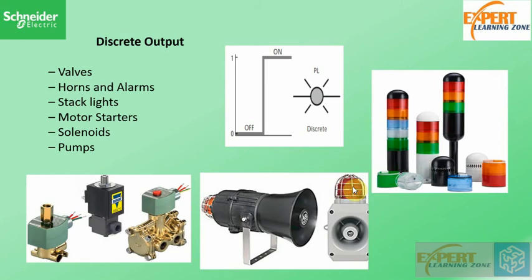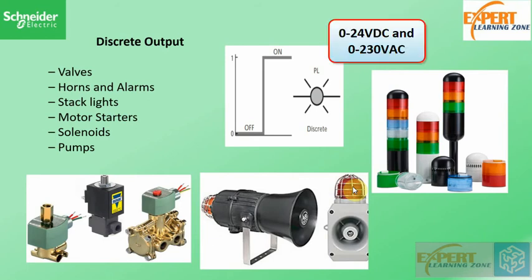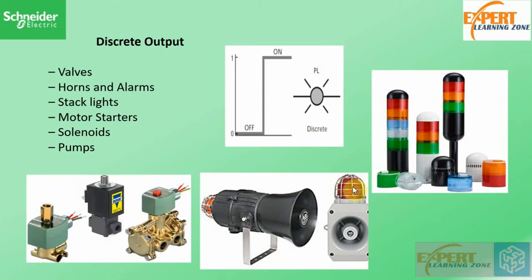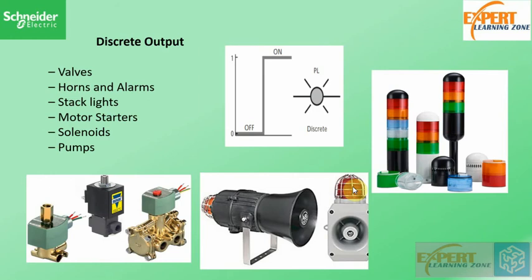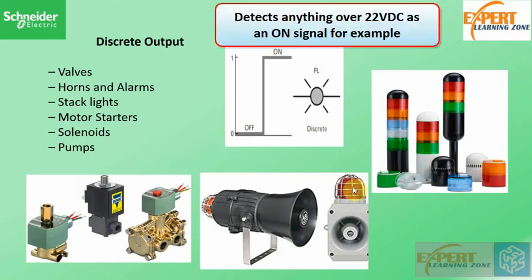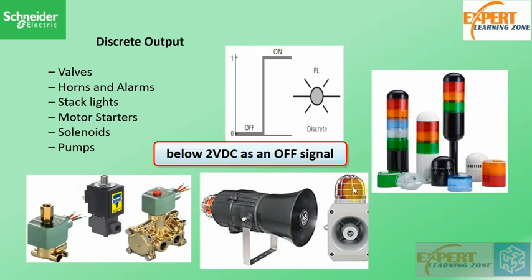The application of your control system will determine the type of discrete device you choose. There are a variety of discrete output devices and modules that can be used in a PLC system to send and receive on/off signals. These devices can be AC or DC and are available in different voltage ranges: 0 to 24 volt DC and 0 to 230 volt AC. Zero is the off signal and 24 volt DC or 230 volt AC is the on signal. Usually there is a threshold for the 0 to 24 volt DC which will detect anything above 22 volt DC as on signal and anything below 2 volt as off signal.